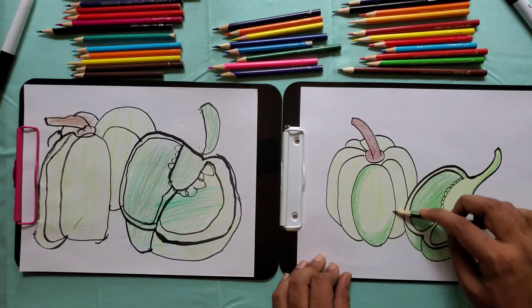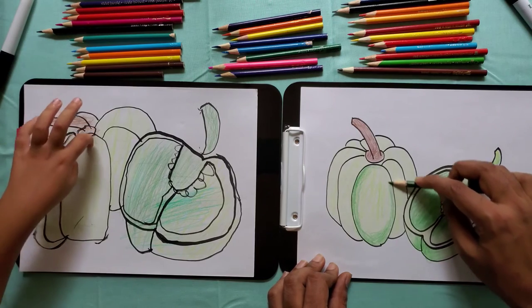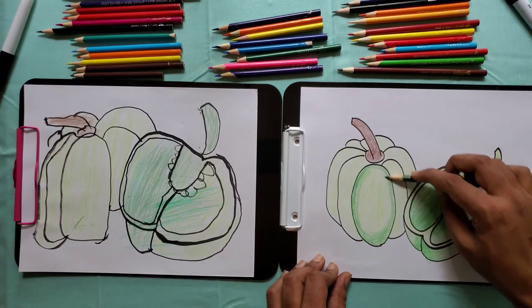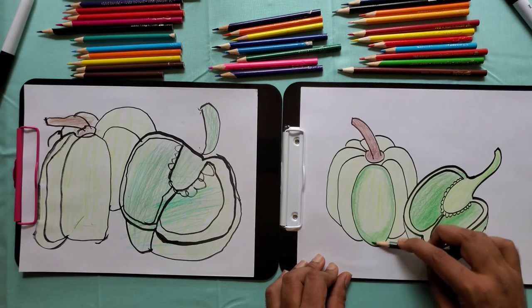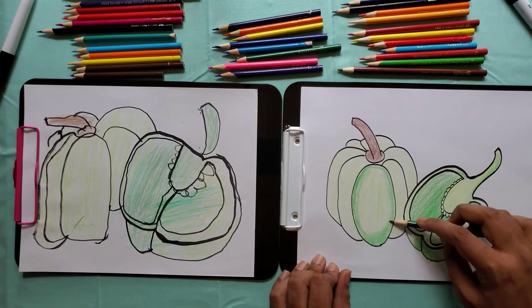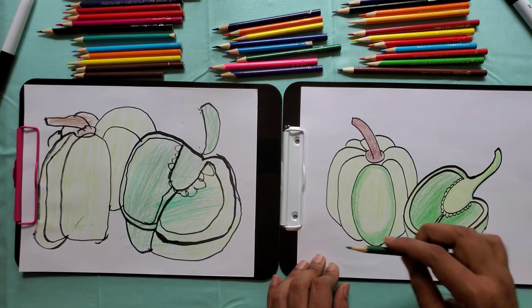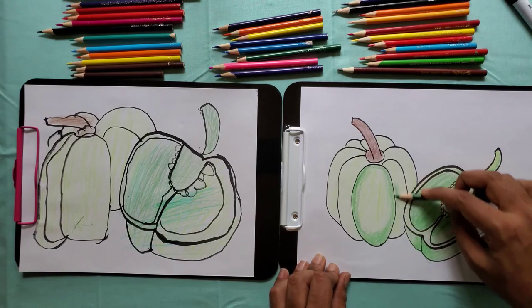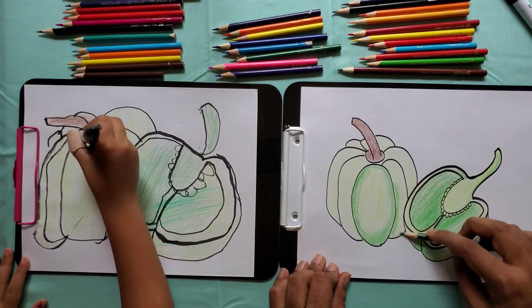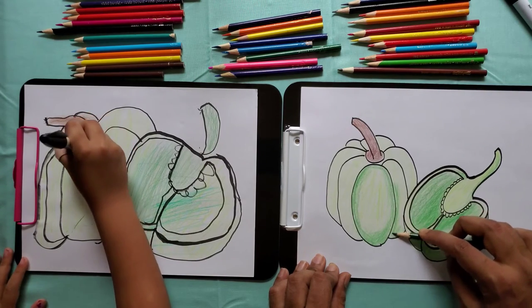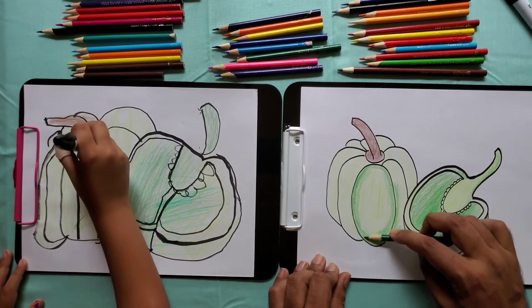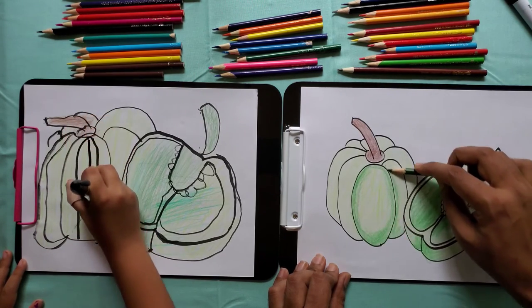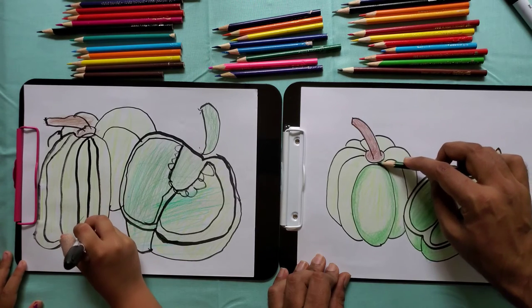You could put more lines on your bell pepper to make it real. Like this. It looks like this.